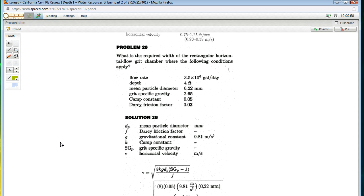They give us a flow rate here of 3.5 million gallons per day, they give us a depth of the grit chamber, tell us the particle diameter size it's supposed to come out, remember anything above a 0.2 mm will come out in a grit chamber, specific gravity, camp constant, and Darcy friction factor. So they want to know the required width, so I'll go ahead and underline that.